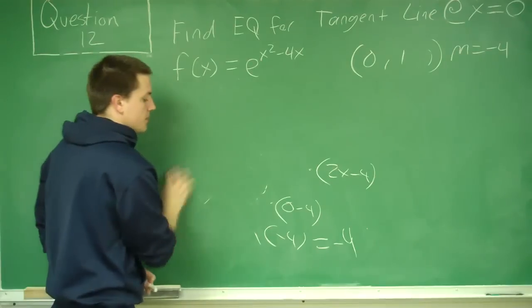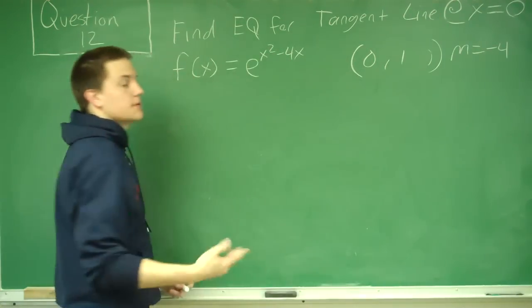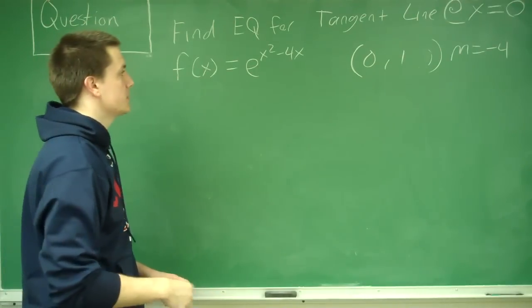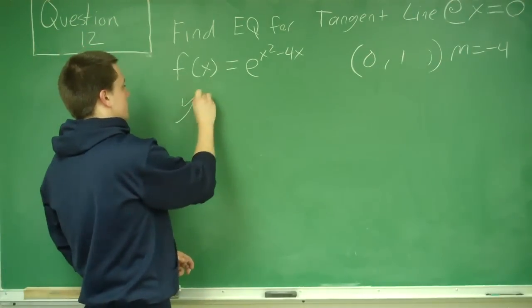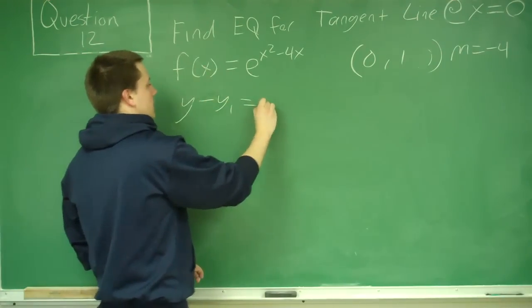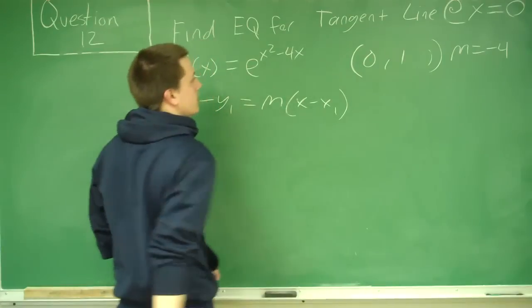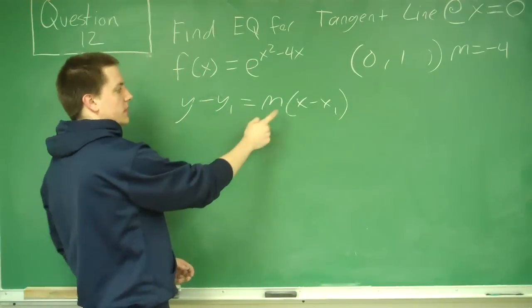So we're almost done now. We have found the point of interest and the slope of interest. Now we just have to find the equation for the line. So we can always use this equation: y minus y1 equals m times x minus x1. Where this is the x value of the point, the y value of the point, and the slope.